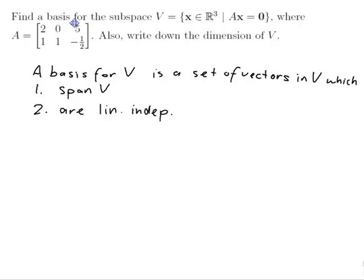Span means that I can write everything in V as a linear combination of the vectors in the basis. And linearly independent means that none of them is a linear combination of the others. But the definition is that the only solution to the equation a₁v₁ up to aᵣvᵣ equals 0 is that all the a's have to be 0. That's the definition of linearly independent.